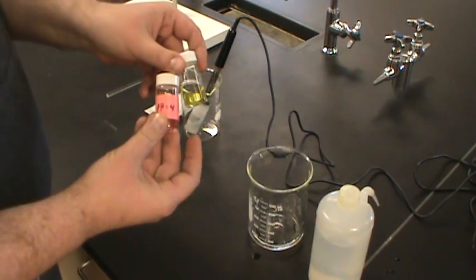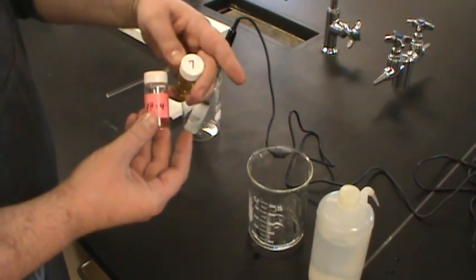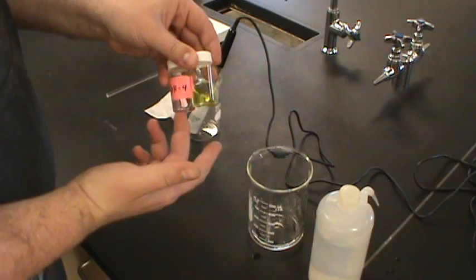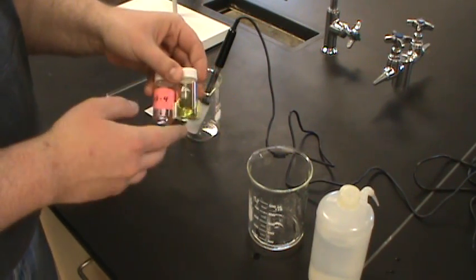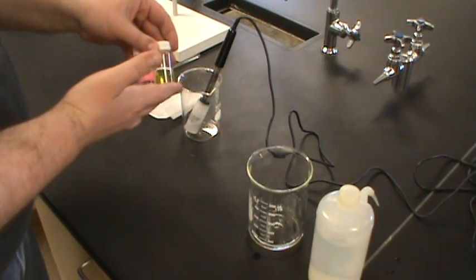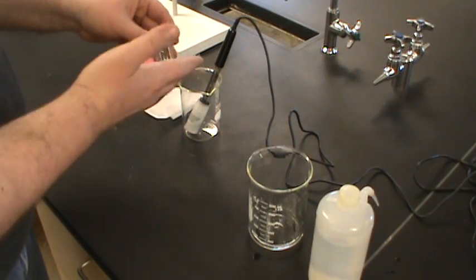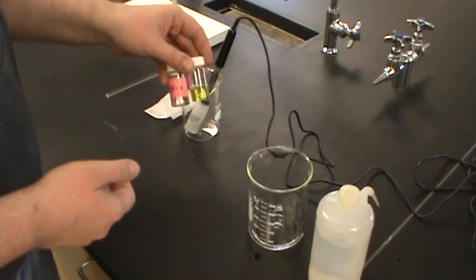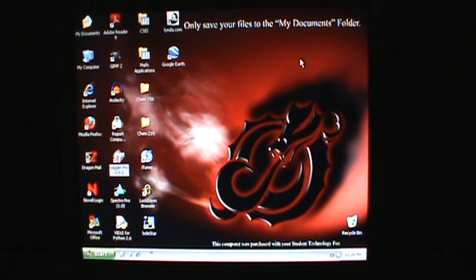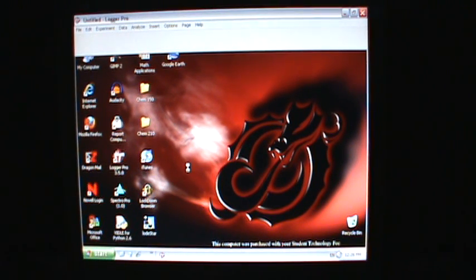We're going to calibrate using a pH 4 and a pH 7 buffer. So these are solutions that are at pH 4 and pH 7. We're going to use a two-point calibration to let us determine the correct conductivity readings that correspond to these two pHs. So let's get the computer set up first. As with all the probes that go through the LabPro interface, this is going to use LoggerPro. So let's get LoggerPro started.